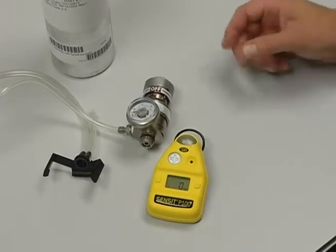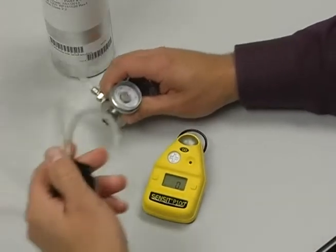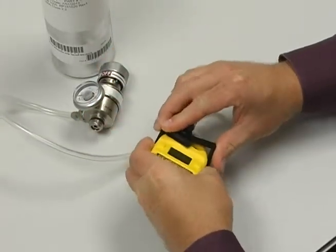Once the unit is in the working display and is zeroed, the first process is to install the calibration adapter onto the instrument itself.